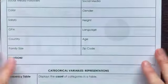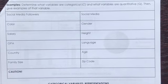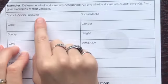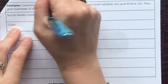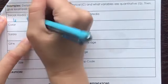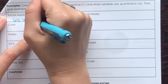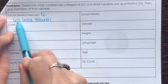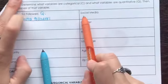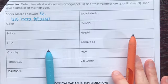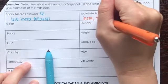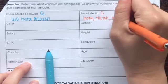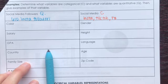Now we're going to go through examples to determine if variables are categorical or quantitative. Social media followers — I'm talking about how many, so that would be quantitative. An example: Mr. Masso has 610 Instagram followers. That's a number, so it is quantitative. If I'm talking about social media itself — that's talking about different types of social media — that is categorical data. An example could be Instagram, TikTok, or Facebook. Those are categories, so this is categorical data.